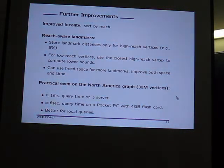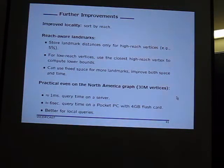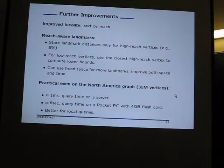By freeing up space through storing only a fraction of landmark data, you can have four times more landmarks while still using less space than the original. You also win in time if you tune things right — more landmarks but distances stored only for high-reach vertices. Sorting vertices by reach gives cache locality, since the computation visits only high-reach vertices. You get about one millisecond on a server and a few seconds on a pocket PC device.